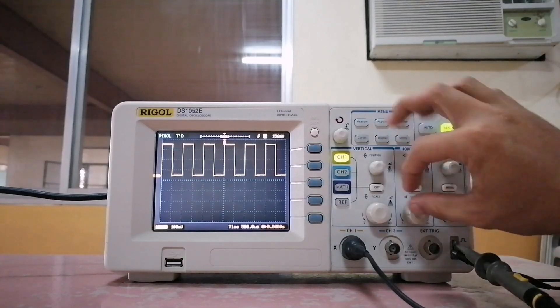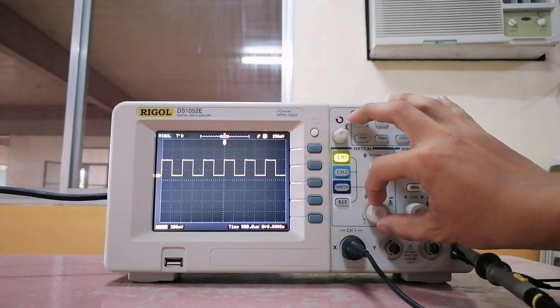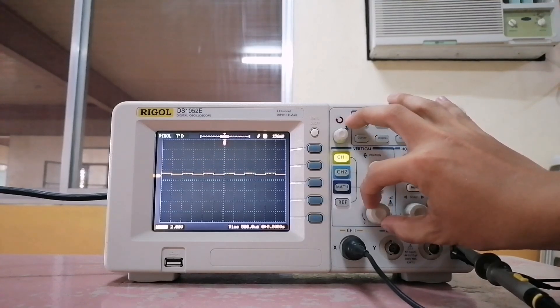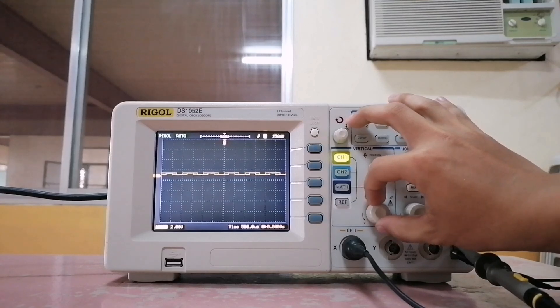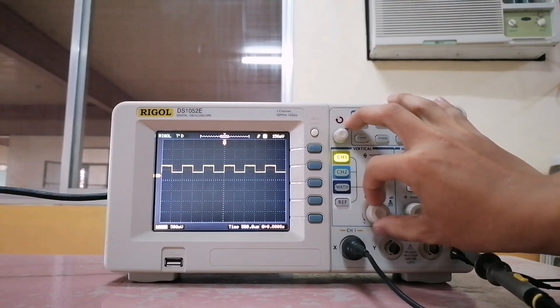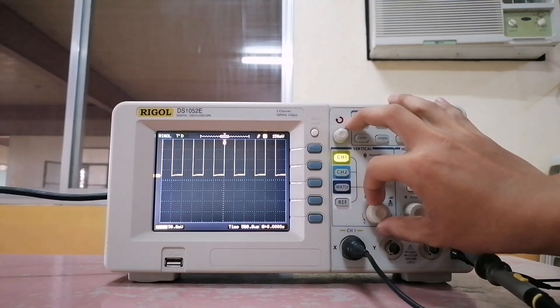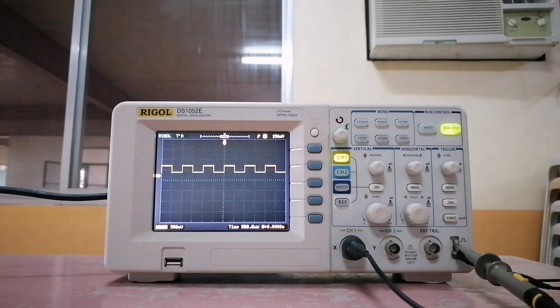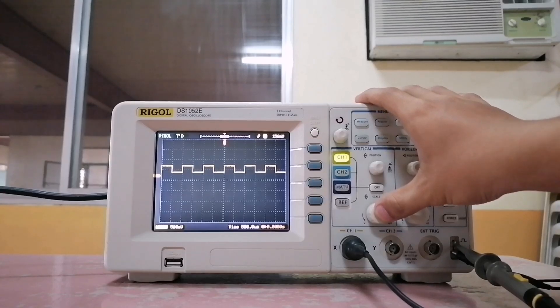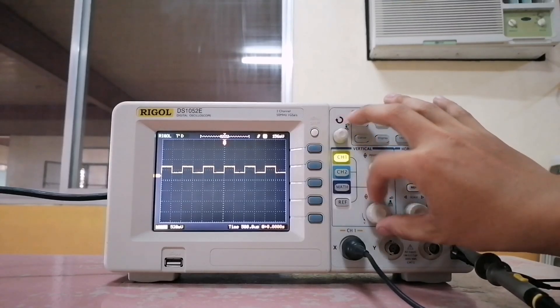To change the voltage division, you can turn this knob. Turning it counterclockwise will decrease the voltage division, and turning it the other way will increase the voltage division. For a finer control of the voltage division, just click the knob first and then turn.